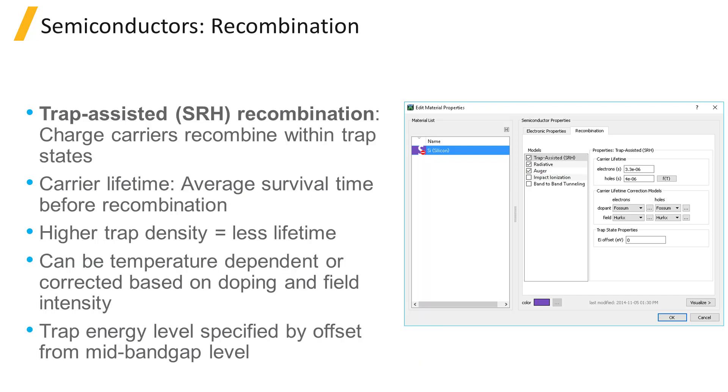The recombination process in the trap-assisted model assumes that there are unoccupied trap states, also referred to as deep level defect states, within the band gap. Typically, these states result from impurities, either intentional or unintentional, and the most active ones have energy levels near the middle of the band gap.